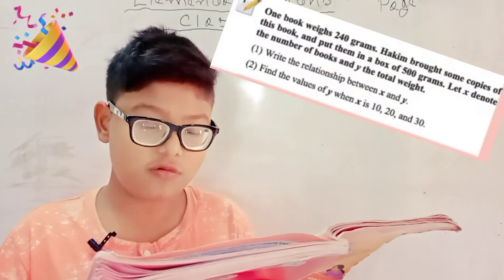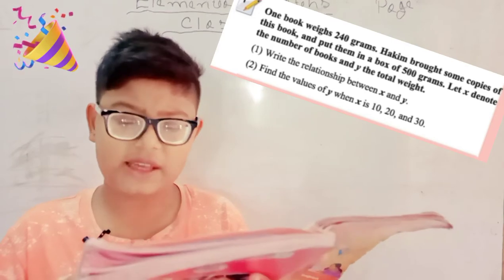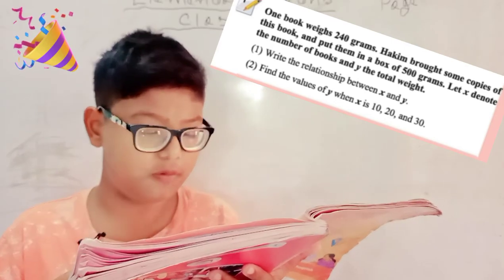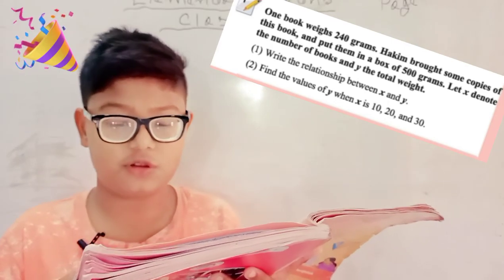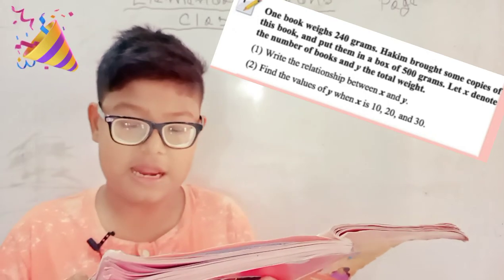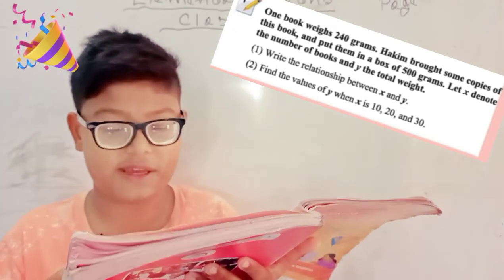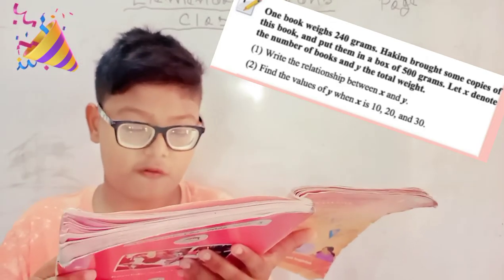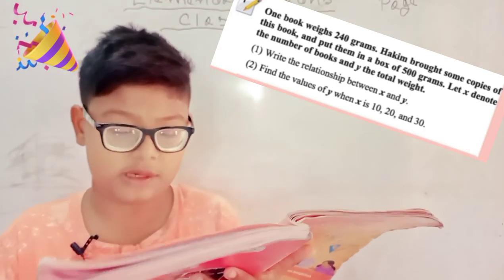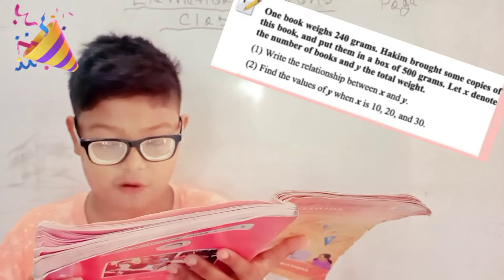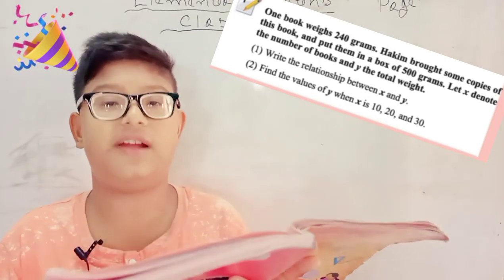One book weighs 240 grams. Hakim bought some copies of this book and put them in a box of 500 grams. Let X denote the number of books and Y the total weight. Then write the relationship between X and Y. Find the values of Y when X is 10, 20 and 30.